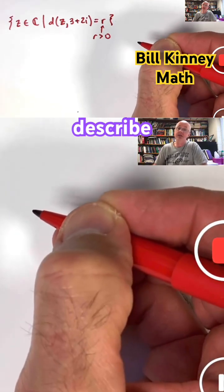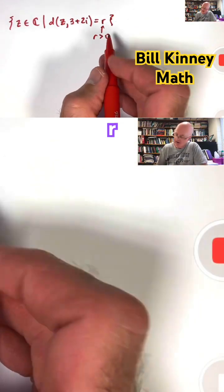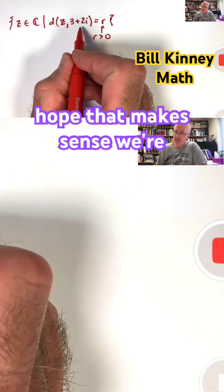that does describe a circle of radius R centered at the point 3 plus 2i. I hope that makes sense.